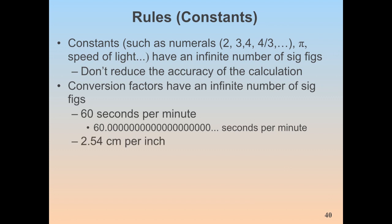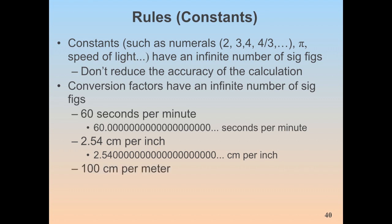Conversion factors also have an infinite number of sig figs because they are defined by definition to be a certain number. For example, 60 seconds per minute — we can think of it as 60.0000... seconds per minute, exactly. Similarly, 2.54 centimeters per inch and 100 centimeters per meter are exact by definition. Whenever you use these conversion factors, they have absolutely no impact on the number of sig figs in your final answer.